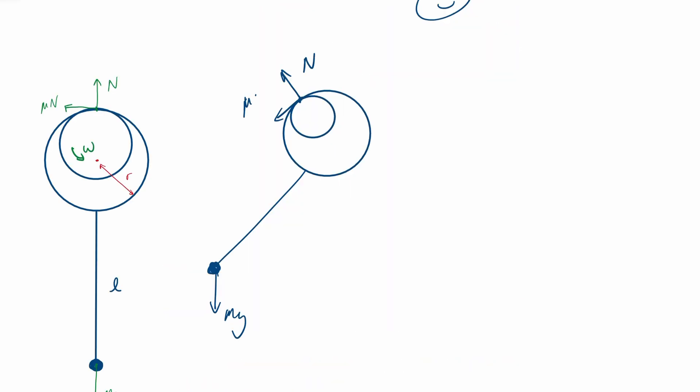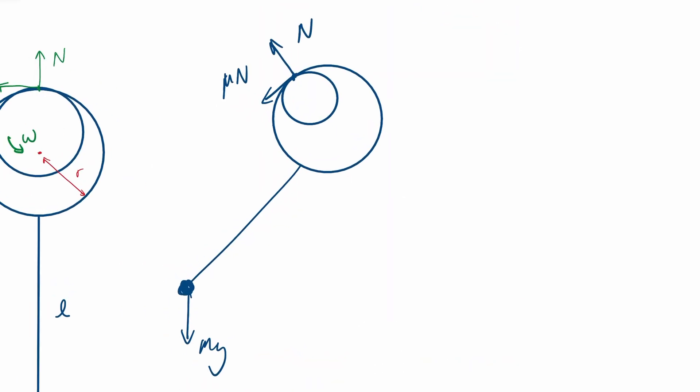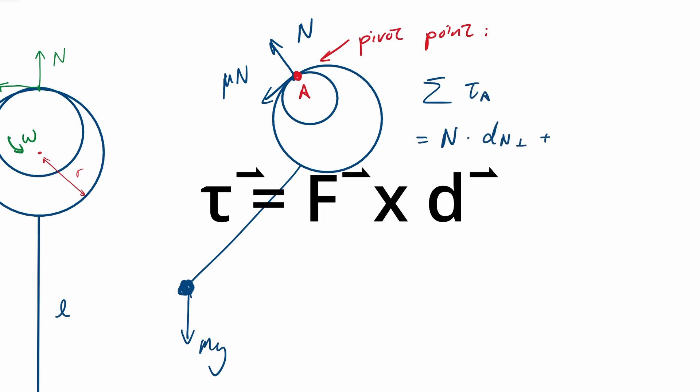For an arbitrary setup, if we set the contact point to be our pivot point, then the moment of the normal reaction and the friction force will be zero because the perpendicular distance will be zero.